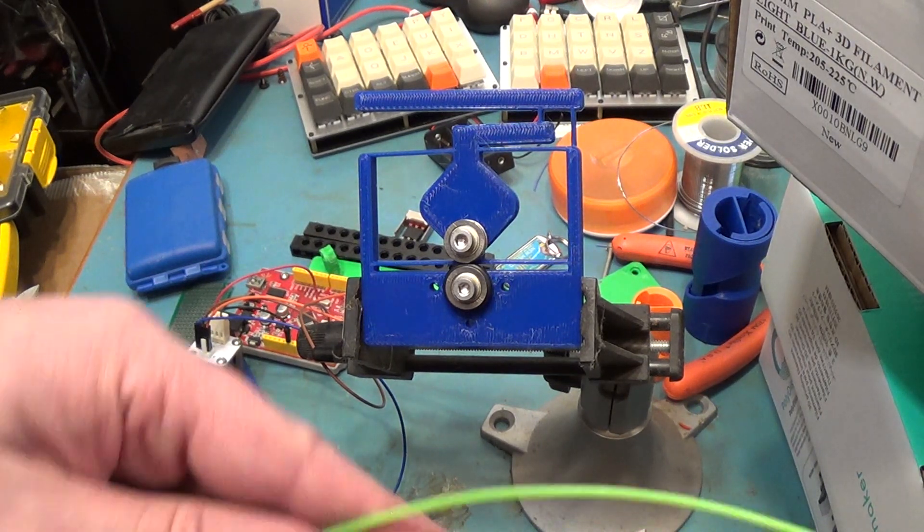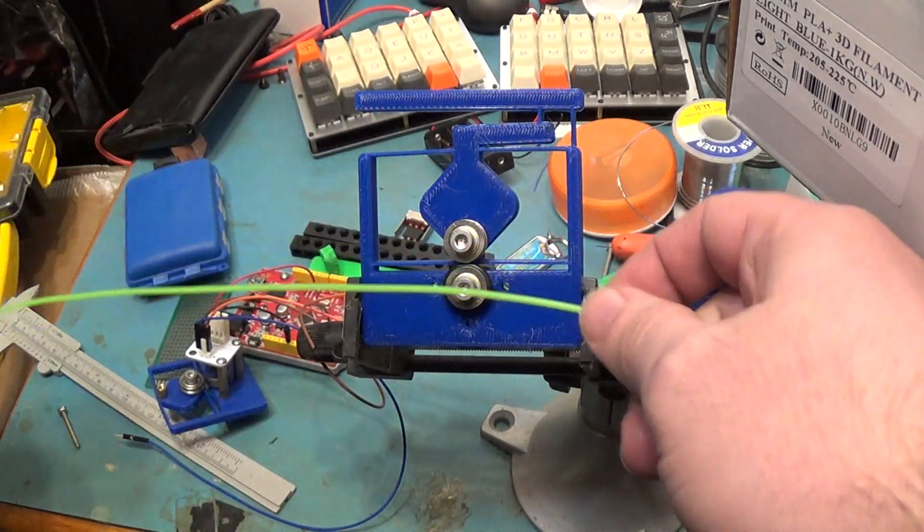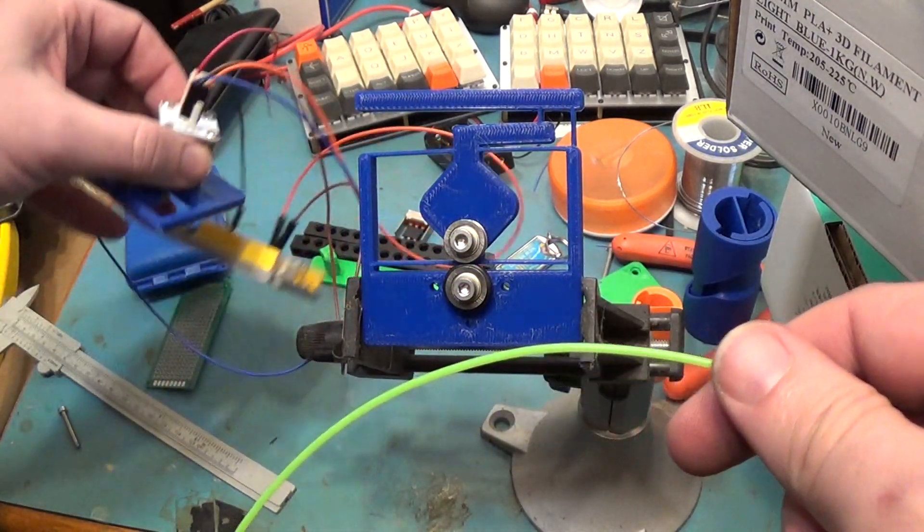This is the loading mechanism for my filament sensor. It's just going to be able to measure filament as it goes through using a little magnetic sensor.